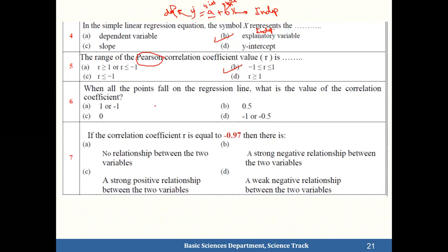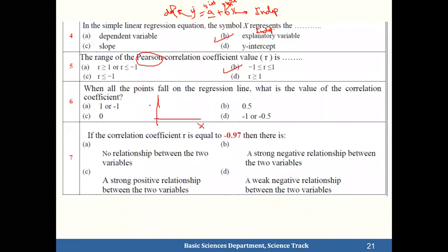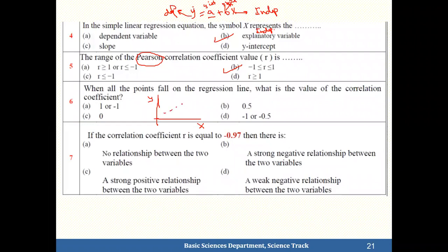When all the points fall on the regression line, what is the value of the correlation coefficient? There are two cases: if all points lie on the regression line, r equals 1 or negative 1. The answer is letter a.